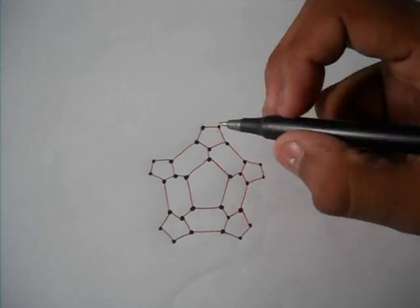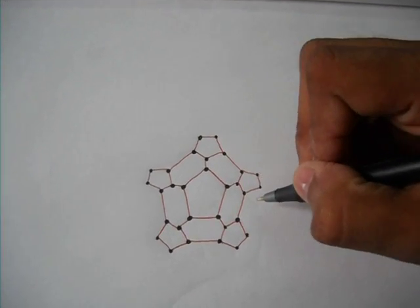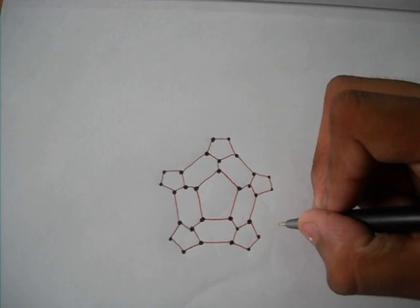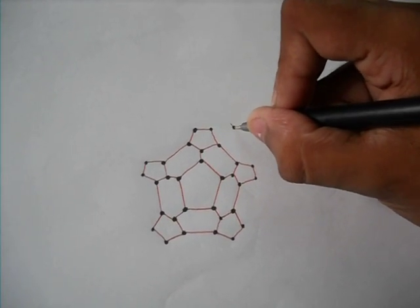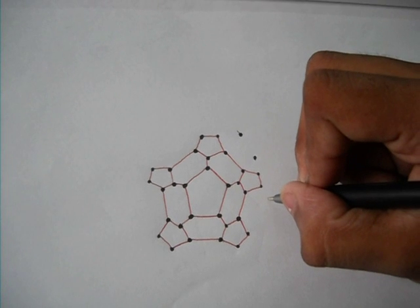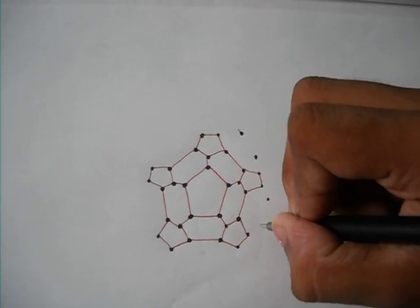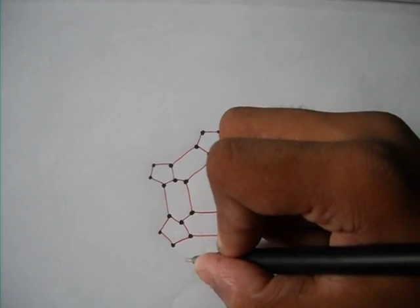Now, we see here we have 4 electrons left. We will be using them to draw more hexagons. 5 of them to be precise.